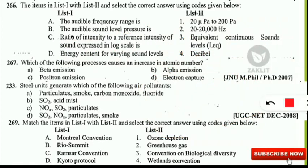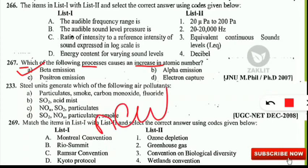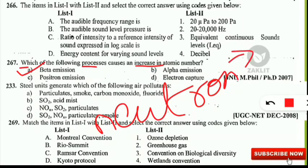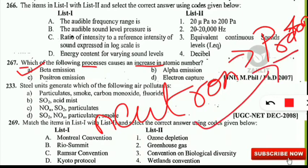The next question is: which of the following processes causes an increase in atomic number? Options are beta emission, alpha emission, positron emission, or electron capture. The correct option is beta emission. In beta emission, a neutron is converted into a proton. Since protons determine the atomic number, an increase in proton number means an increase in atomic number. So option A — beta emission — is the correct option.